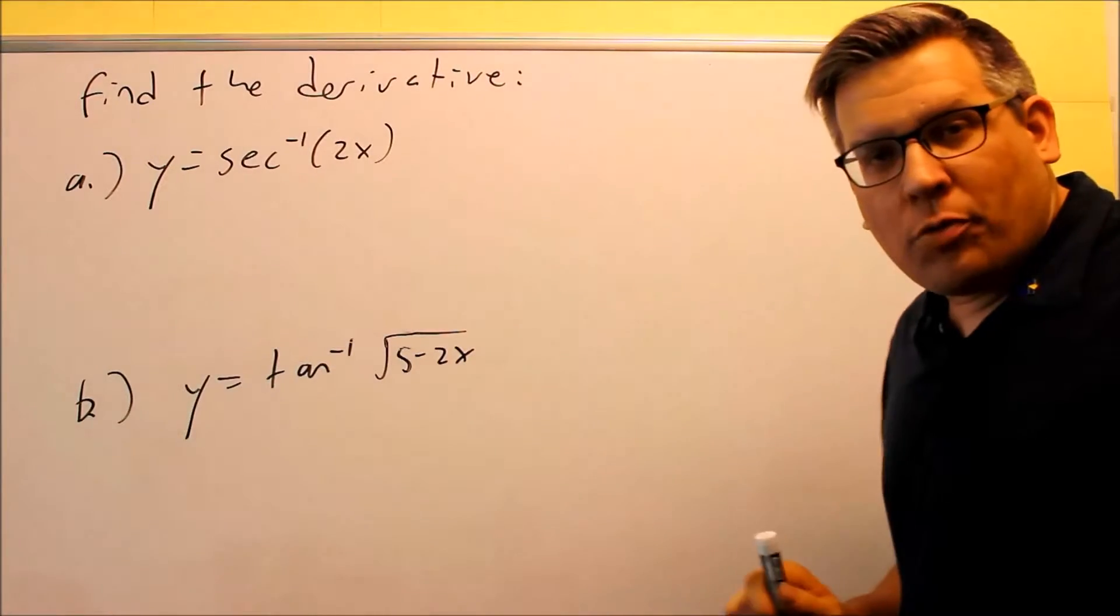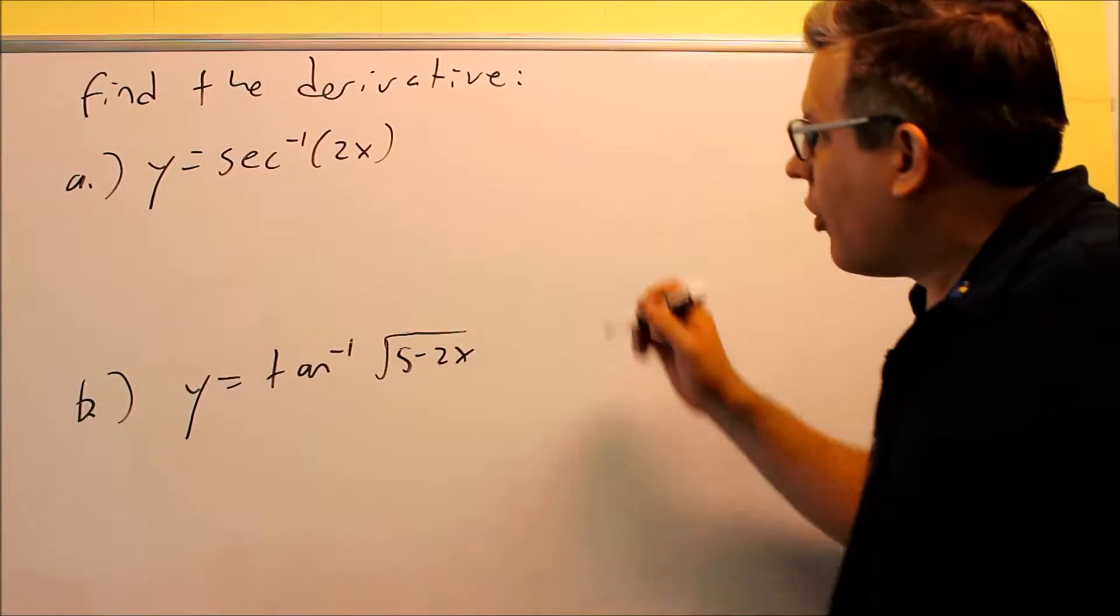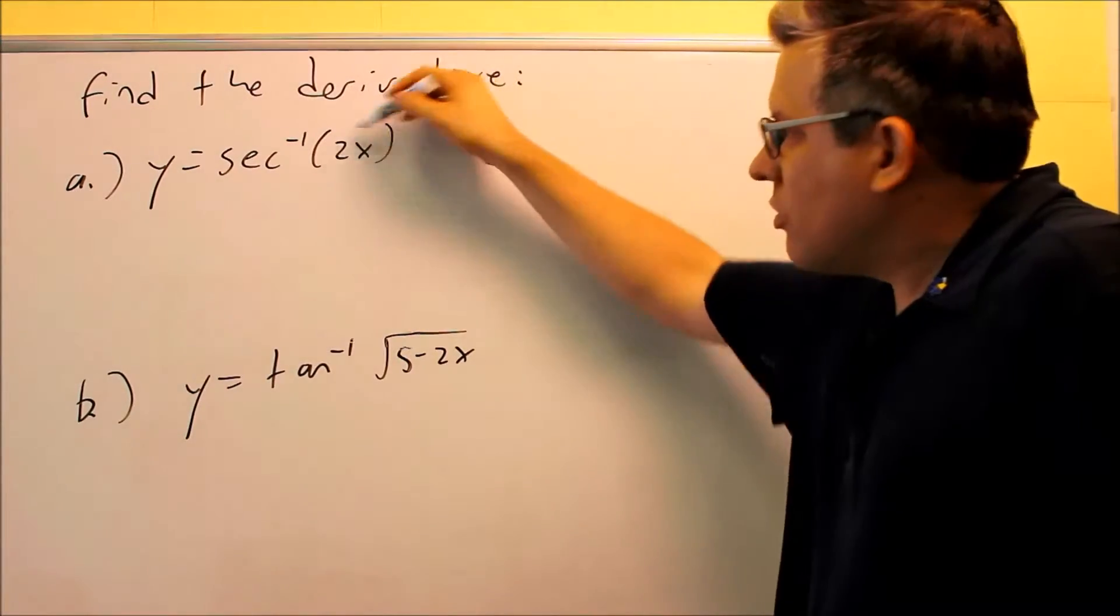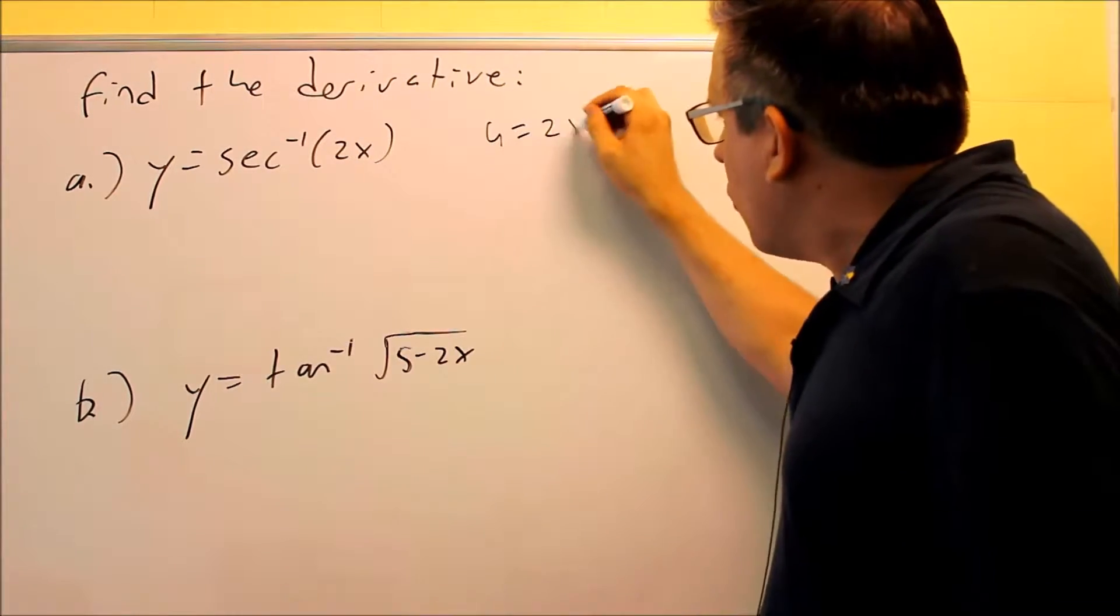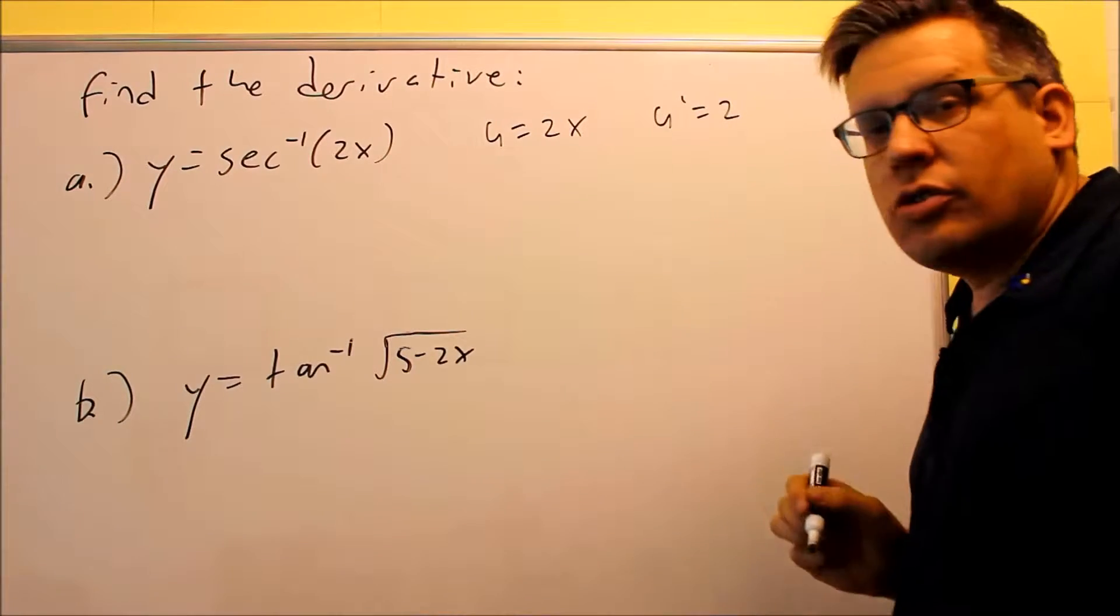Now we have to make sure we know the formula for taking the derivative of inverse secant. That formula is going to involve a u-prime. In this case, your u is equal to what's on the inside and so u-prime is going to be equal to 2.